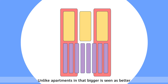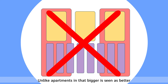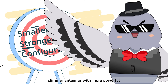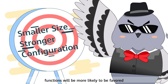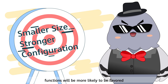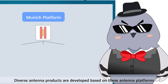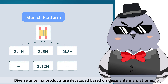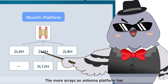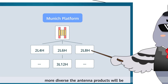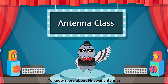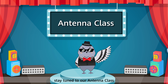Unlike apartments in that bigger is seen as better, slimmer antennas with more powerful functions will be more likely to be favored. Diverse antenna products are developed based on these antenna platforms. The more arrays an antenna platform has, the more diverse the antenna product will be. To know more about Huawei antennas, stay tuned to our Antenna class.